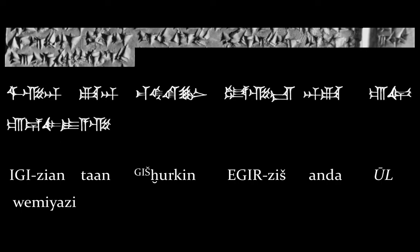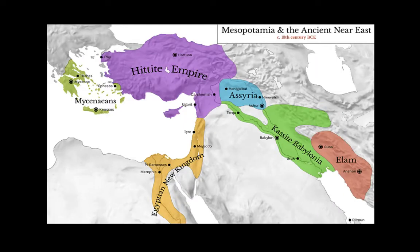To understand why a Hittite text would be written in a mix of Hittite, Sumerian, and Akkadian words, we have to take a step back and look at the history of the Hittite language in the context of the ancient Near East. The Hittite people came from Anatolia, modern-day Turkey, and they spoke their language, Hittite, for centuries before they actually started writing it. It was only when the Hittites started commerce with other populations or wars of expansion into other lands that they felt the need to write their language, and to write it they adopted the writing system used to write Akkadian, the main language of Mesopotamia, the land between the two rivers. This writing system was cuneiform.